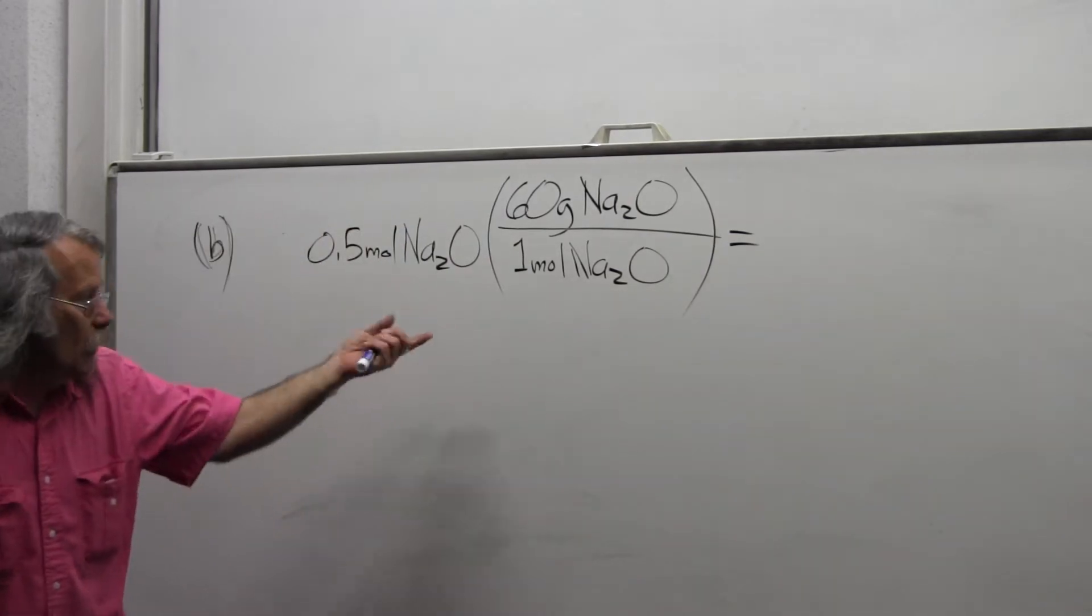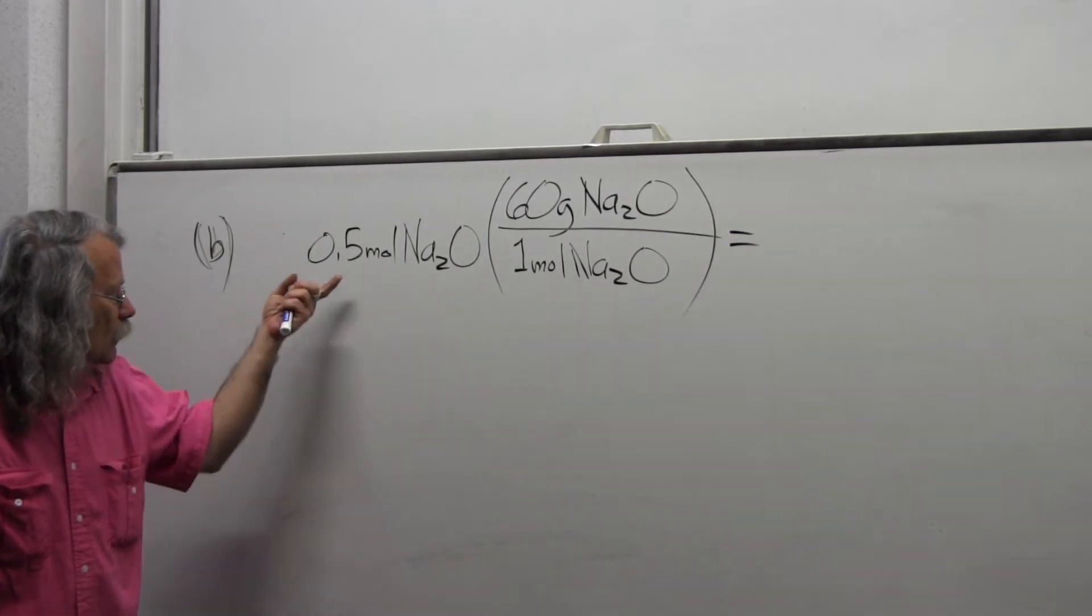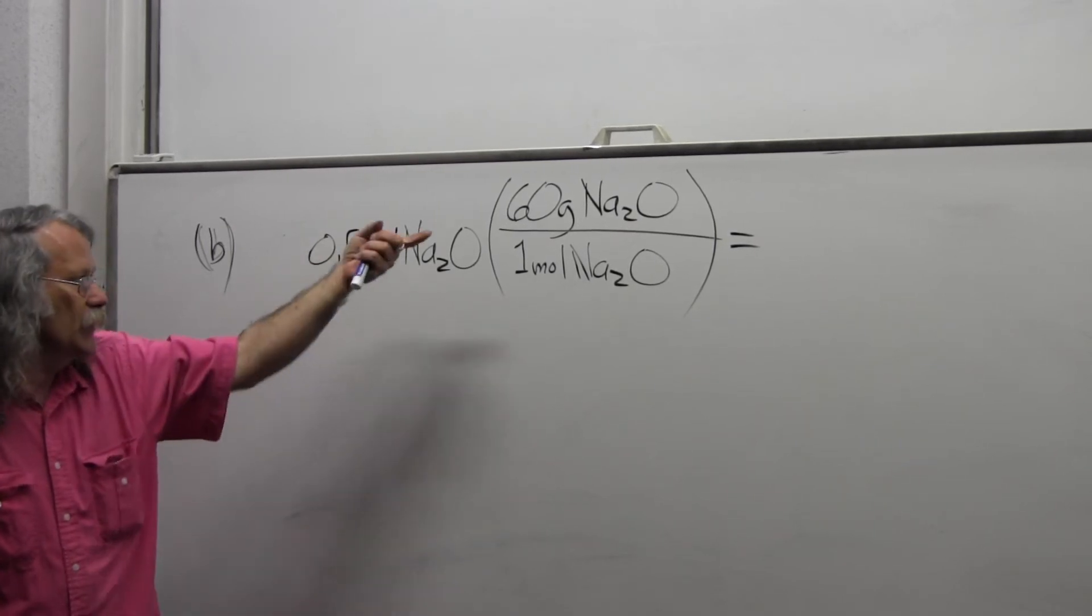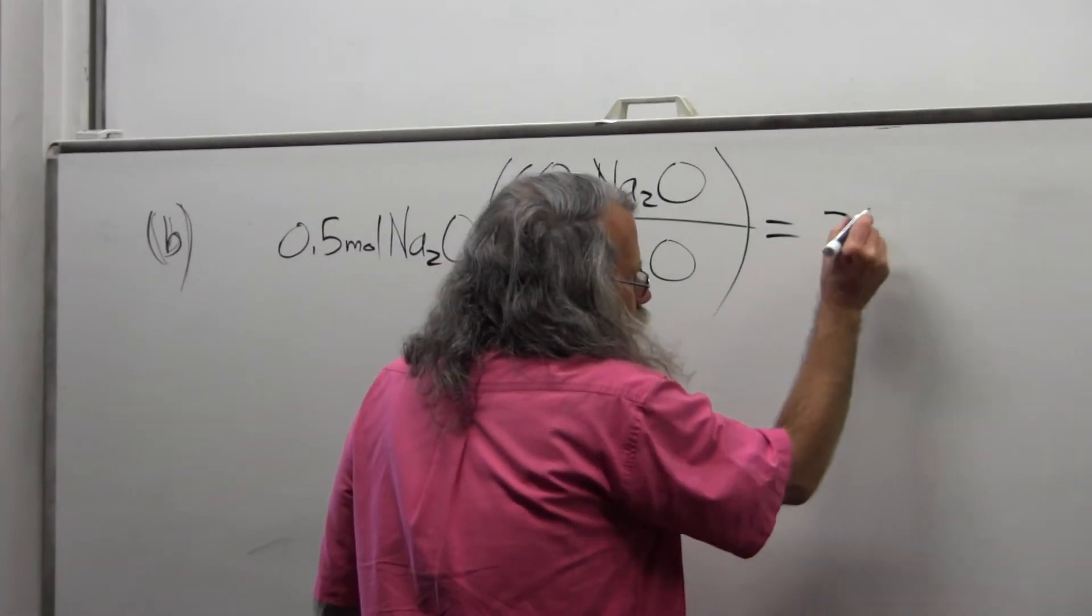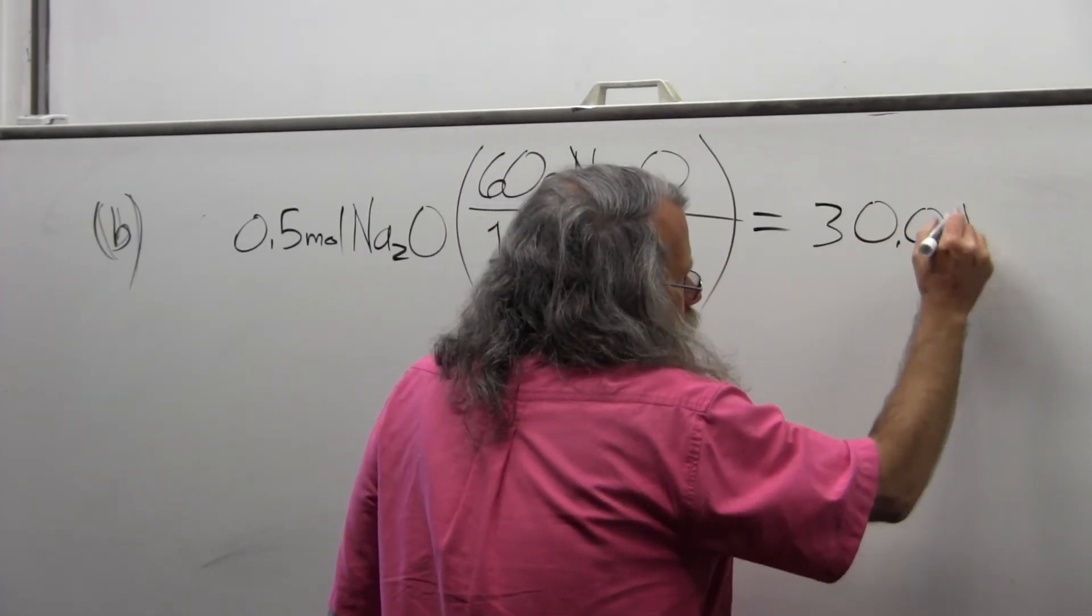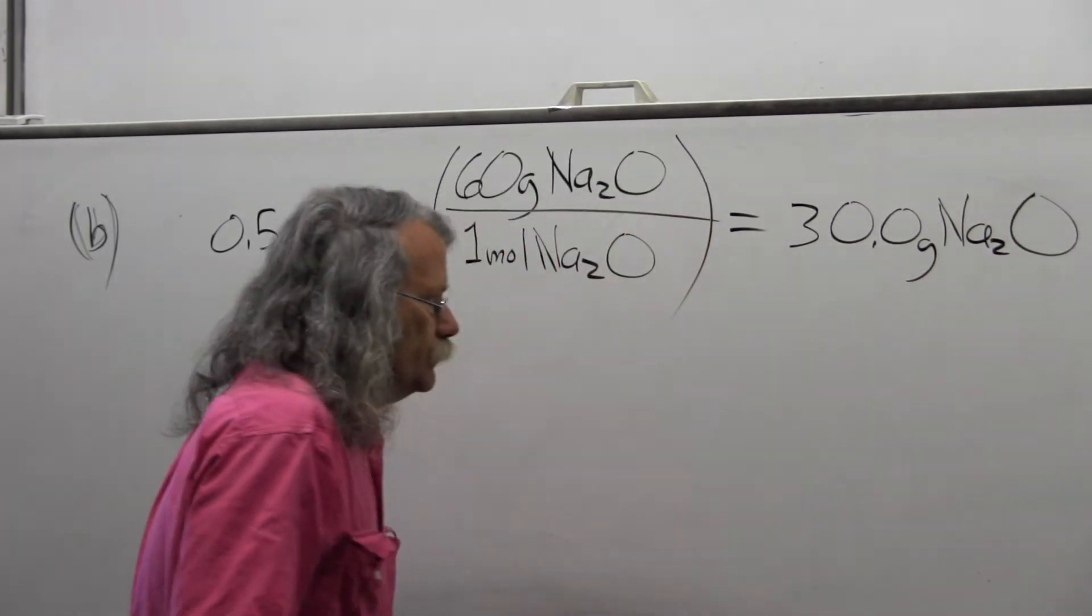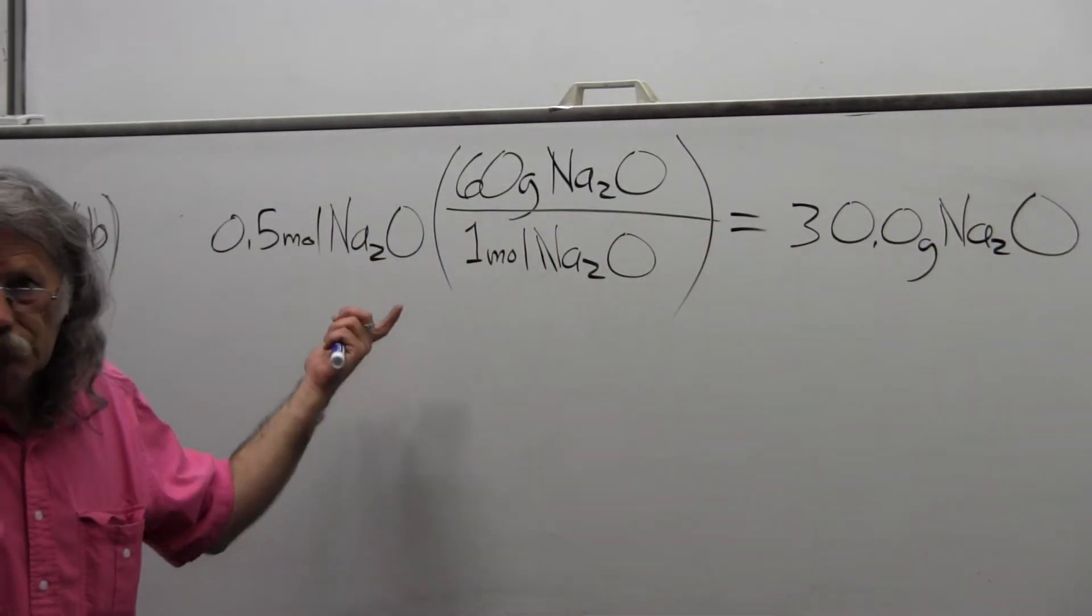And so I have one-half times 60, which turns out to be 30 grams of sodium oxide. That answers part B.